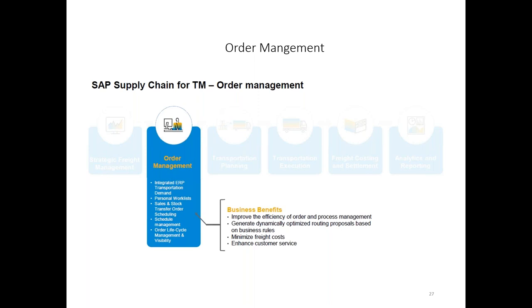In order management, we handle multiple things: purchasing-related orders, sales orders, and stock transport orders. All this order management needs to be integrated to your transportation management so that TM is linked to all these orders. Both inbound and outbound logistics are covered — inbound for receiving goods into your warehouse, outbound for shipping goods out — with corresponding inbound or outbound deliveries as reference documents.